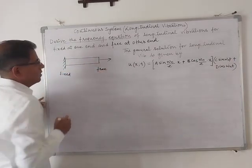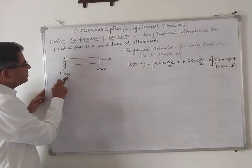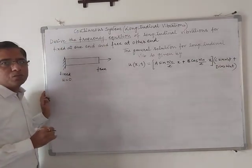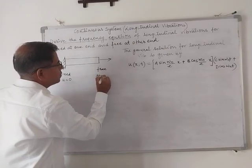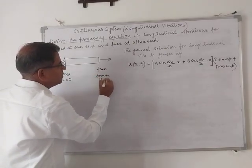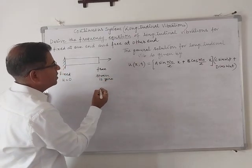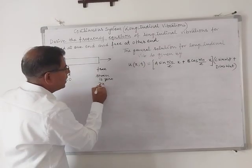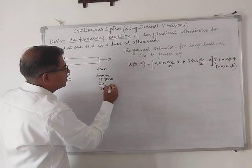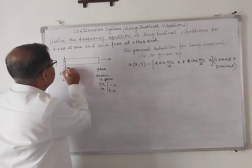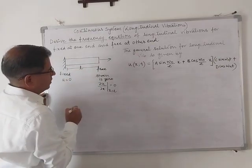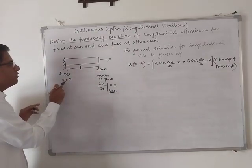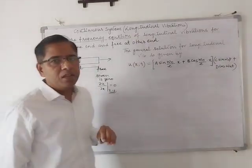We know that whenever there is a fixed end, the displacement of the bar is zero. At the free end, the strain is zero, meaning the change in length upon original length is zero, or the rate of change of displacement with respect to distance is zero. So del u by del x equals zero at x equal to l, where l is the length of the shaft. At the fixed end, the displacement is zero.